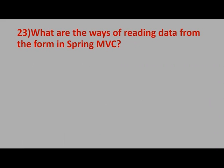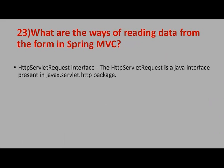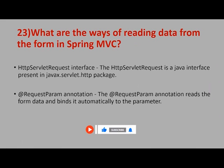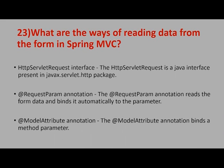What are the ways of reading data from a form in Spring MVC? If a request form is submitted, you can use the legacy technique — HttpServletRequest as a method parameter and call request.getParameter(), but this always returns a String so you have to do manual conversion. You can use the @RequestParam annotation, which also supports type conversion. You can also use @ModelAttribute to read the entire form into an object as a method parameter.